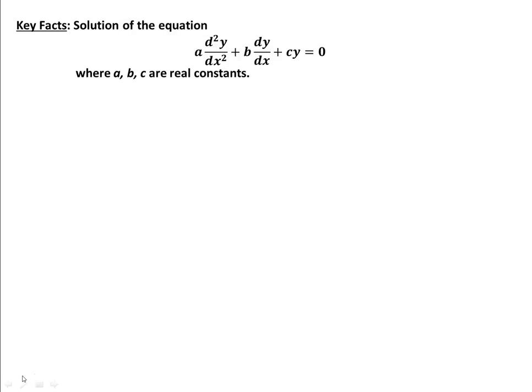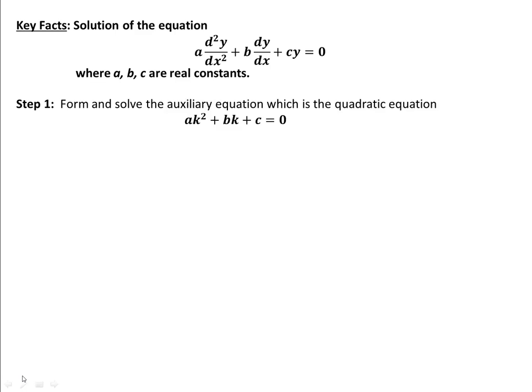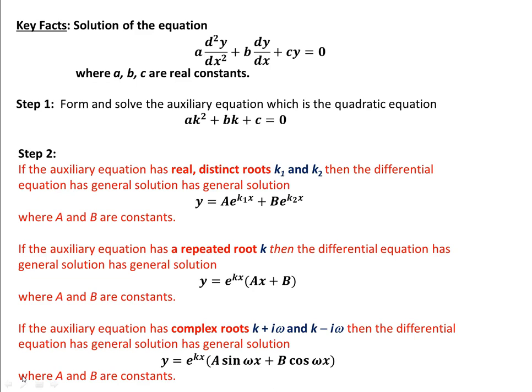So let's have a look at the key facts. For the equation a·d²y/dx² + b·dy/dx + cy = 0, to solve such an equation we form what is called the auxiliary equation, which is simply the quadratic equation with the same coefficients a, b and c. If we have two real distinct roots k1 and k2 to the auxiliary equation, then the general solution is y = ae^(k1·x) + be^(k2·x).